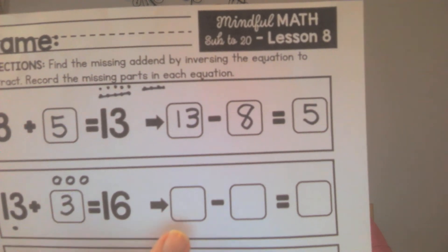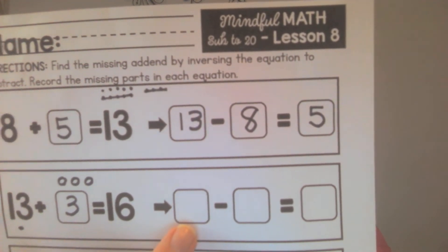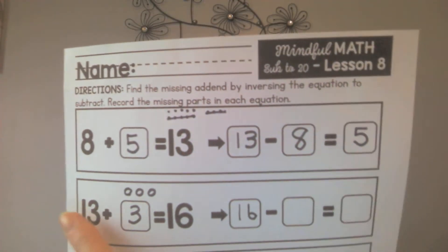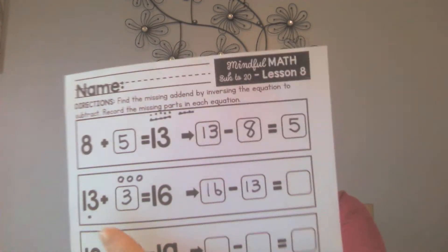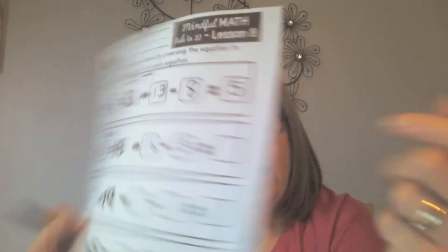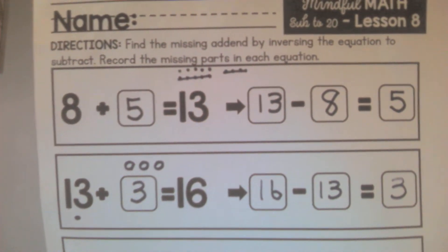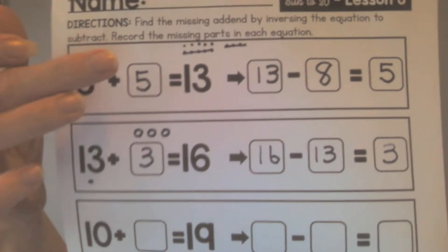Now switch those numbers around to build a takeaway question. Remember when you do the takeaway question you start with the whole or the biggest number, which is 16. Then subtract the number they gave you, which is 13. Use what you got for the missing addend as your answer. Use whatever strategy works best for you.